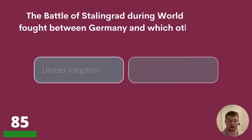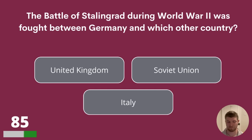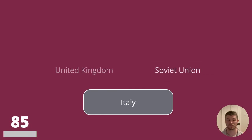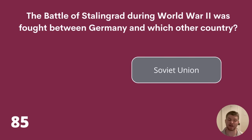Question 85. The Battle of Stalingrad during World War II was fought between Germany and which other country? United Kingdom, Soviet Union, or Italy? The answer to question 85 is Soviet Union.